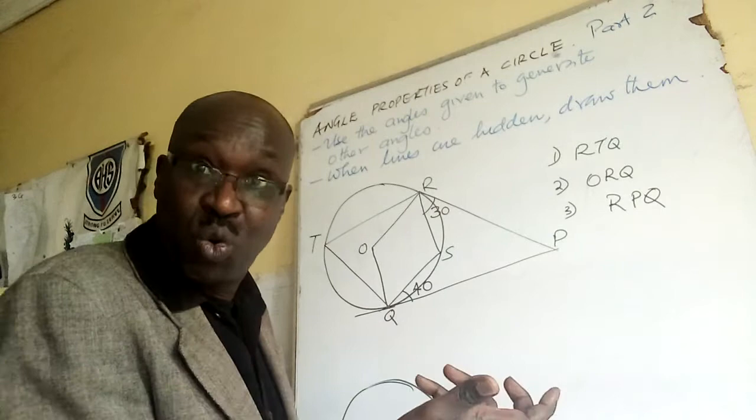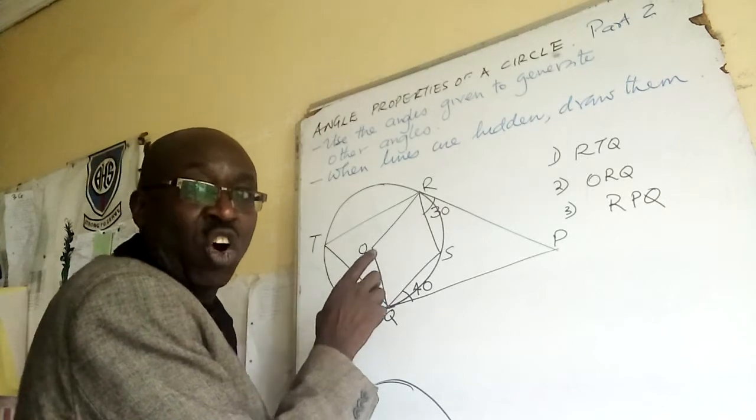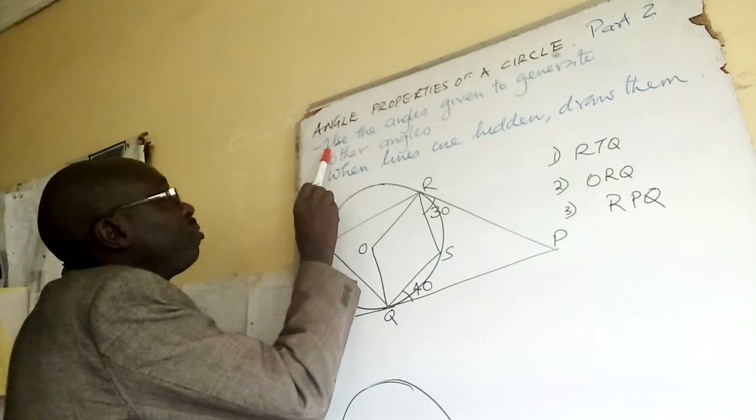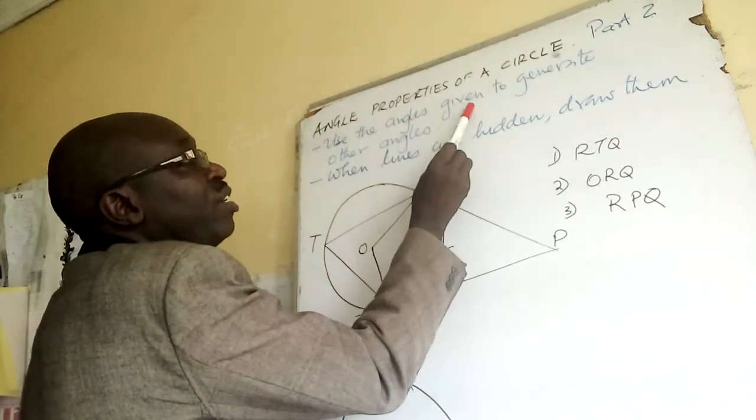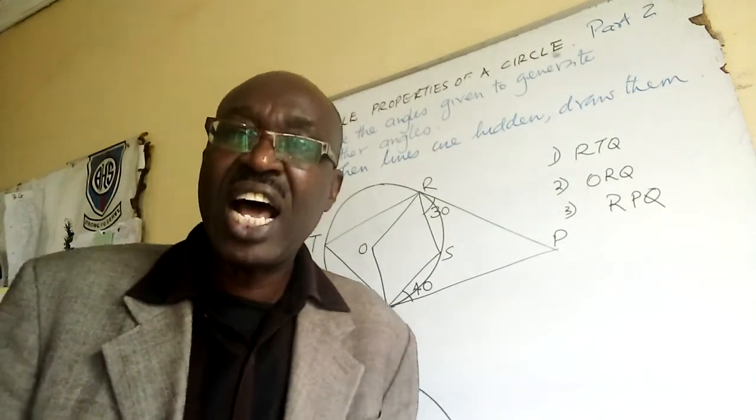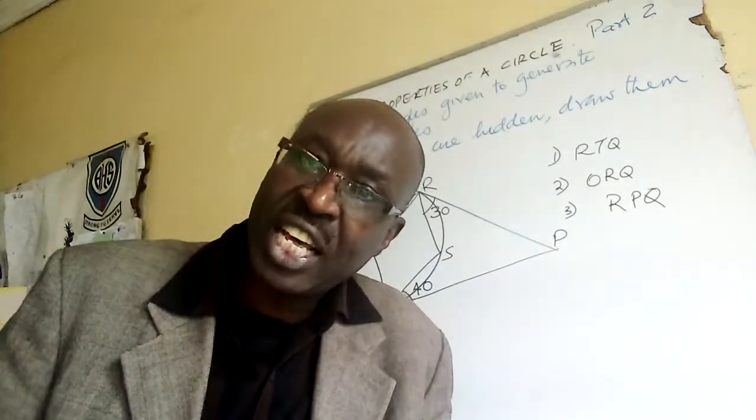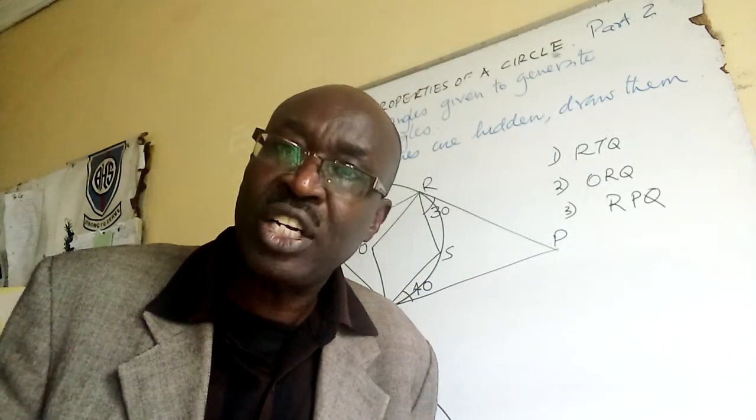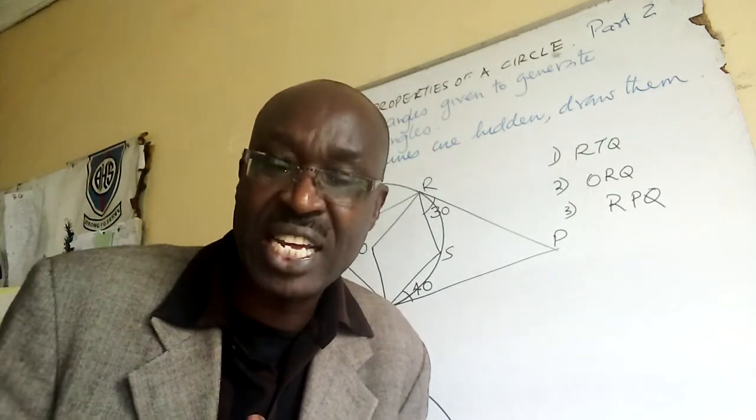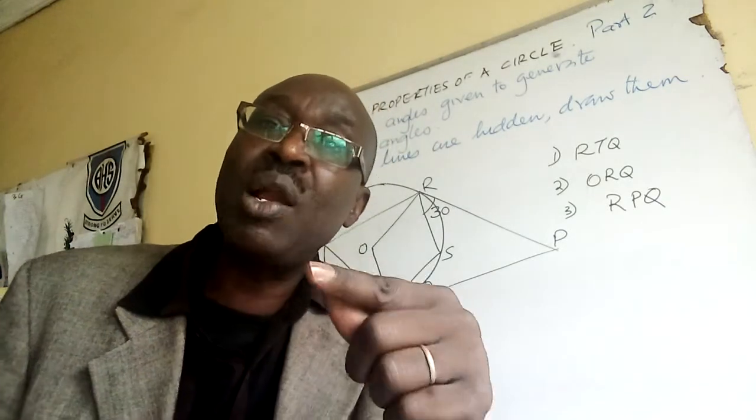I want us to put what we have. You have seen there is a chord which is not shown, and that's why I've written here: use the angles given to generate other angles. You are given angles so that you use them to generate others. That means the knowledge of equilateral triangle, isosceles triangle will come in handy. So any angle you are given is to help you generate another.